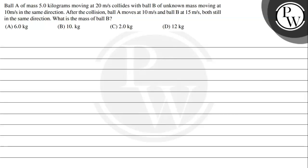Hello everyone, let's read the question. So, the question says: Ball A of mass 5 kg moving at 20 m/s collides with ball B of unknown mass moving at 10 m/s in the same direction. After the collision, ball A moves at 10 m/s and ball B at 15 m/s, both still in the same direction.